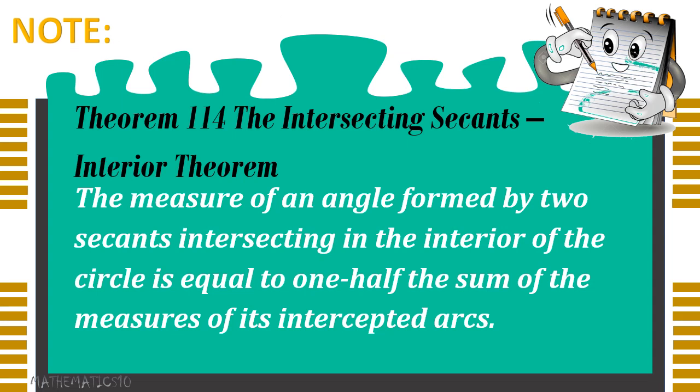What is Theorem 114? The measure of an angle formed by two secants intersecting in the interior of the circle is equal to one-half the sum of the measures of its intercepted arcs.